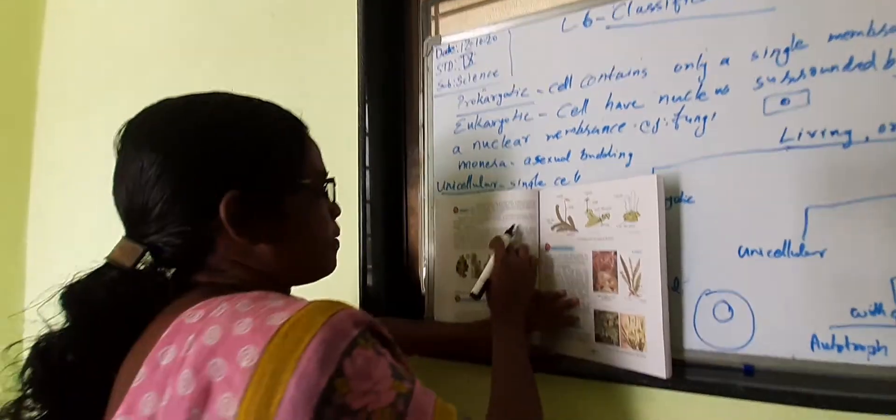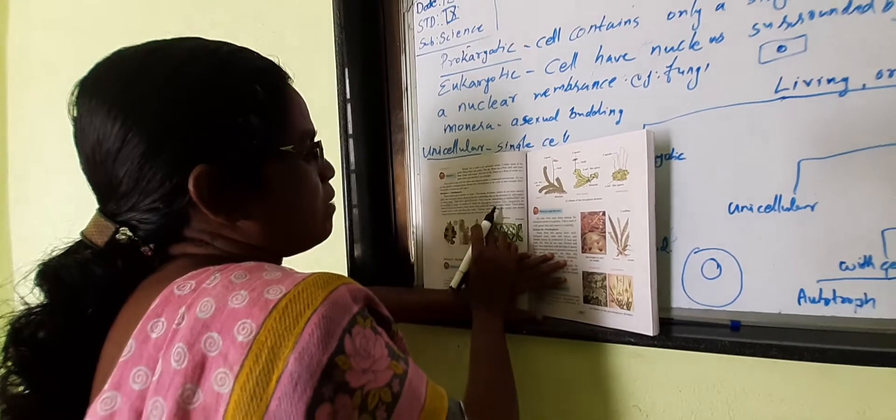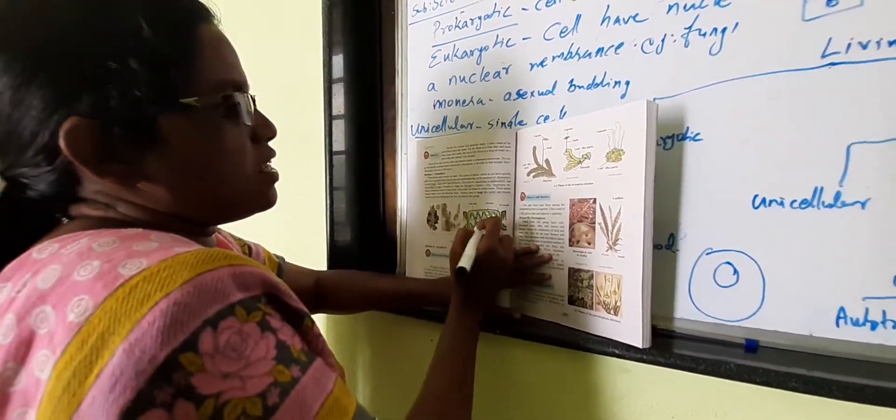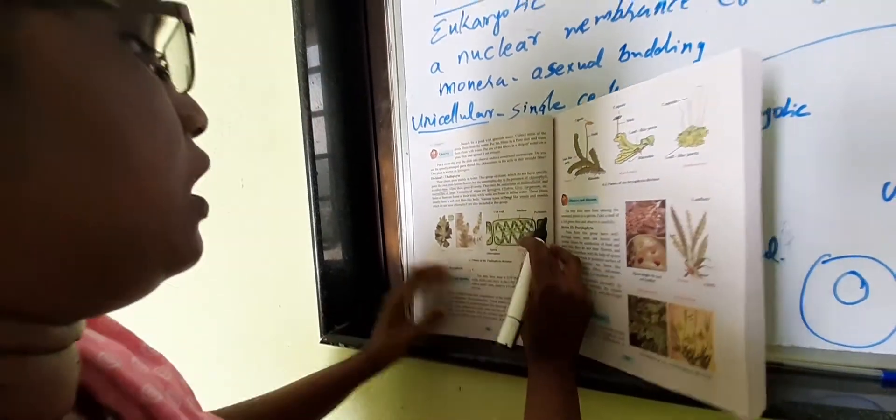This is the plant of Thalophyte division. This diagram shows a Trichogyne diagram. The cell wall is here, nucleus here. That is a pyrenoid. This is what is called a pyrenoid.